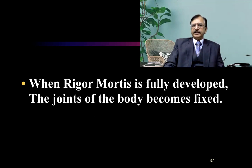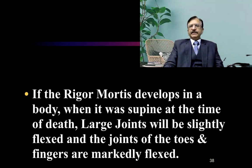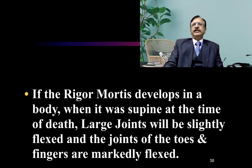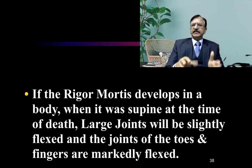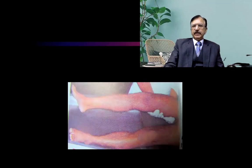When the rigor is fully developed, the joints become fixed. The state of flexion or extension of the joints will depend upon the position of the trunk and the limbs at the time of death. If rigor mortis develops when the body was supine — that is, head facing upward at the time of death — then the large joints, such as the knee joint and hip joint, will be slightly flexed. This flexion is due to a little shortening of the muscles of the forearms and the legs.